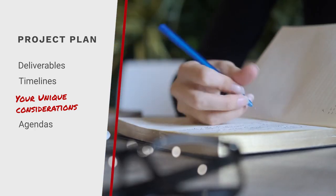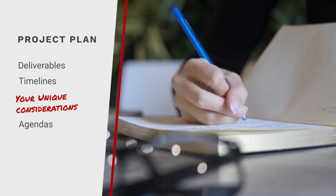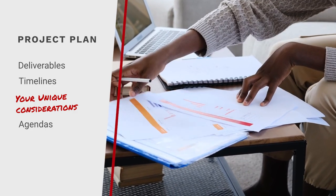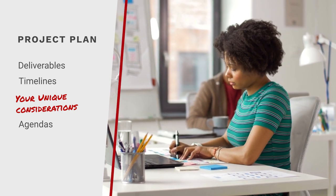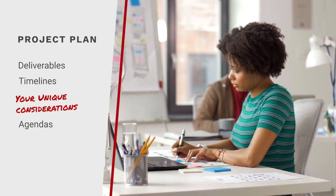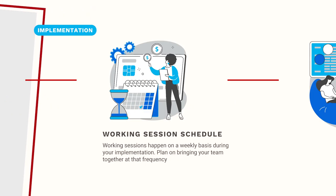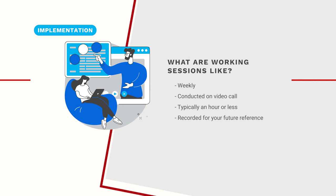The project plan will contain agendas for each working session during the project, and these agendas will be updated as the project progresses. Implementations typically run for 8 to 12 weeks after kickoff. Plan on connecting with your implementer for a working session each week during that time. These sessions are conducted by video call and typically are one hour or less.